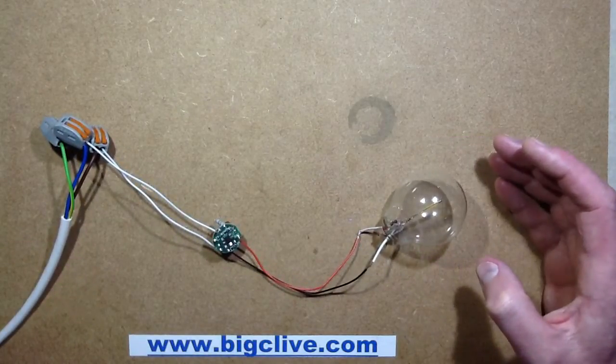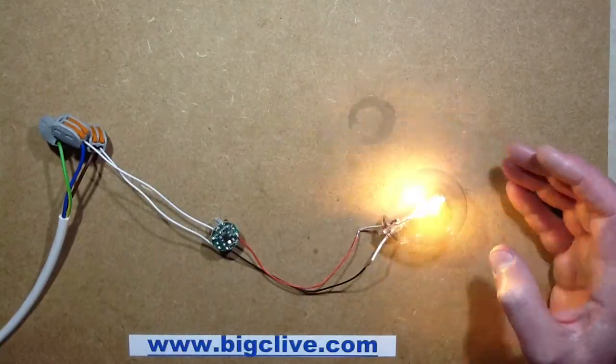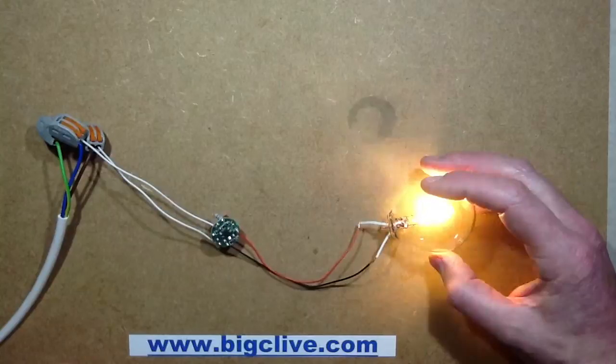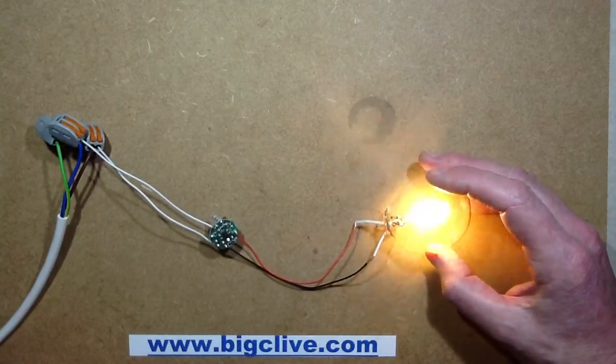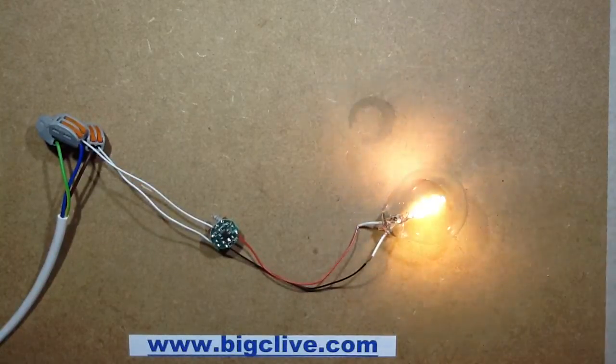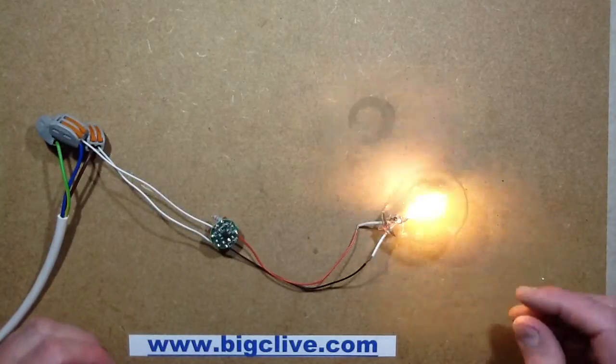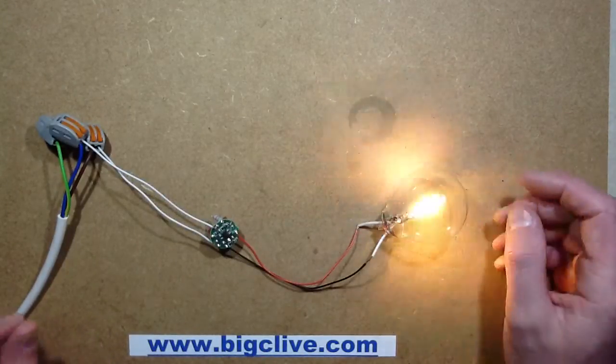I'll plug this in and you shall see it lit. So there we go, it looks ripply on the camera because there is quite a lot of ripple on top, but looking at it, it's not easy to see because it is just a gentle sinusoidal ripple, it's not flickering too excessively.